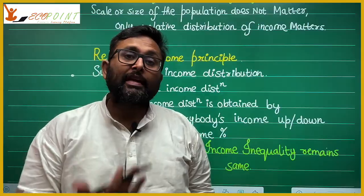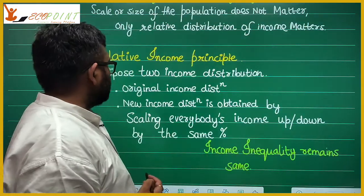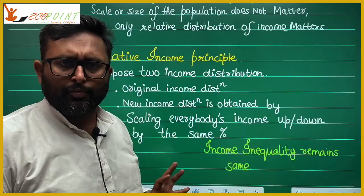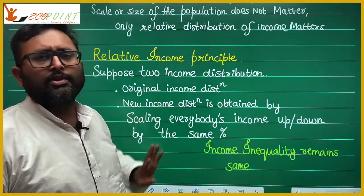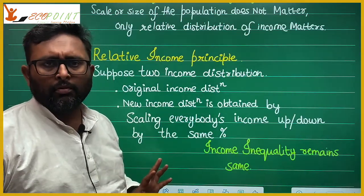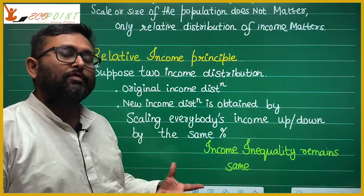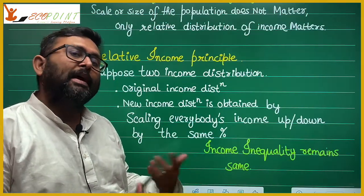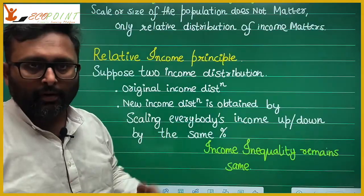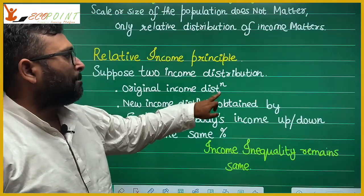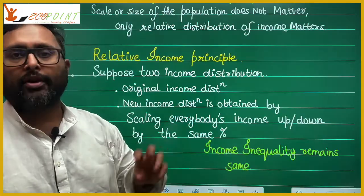Then you have the relative income principle. The relative income principle says: suppose you have two income distributions. The first is the original income distribution, and the second is obtained by scaling everybody's income up or down by the same percentage. For example, in the first distribution my income was 100 and your income is 200.